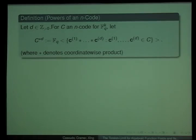So far, we have only talked about the usual properties of secret sharing. Now we define the arithmetic properties that distinguish this line of work. It's all about powers of an n-code. Given an n-code and a positive integer d, we define the d-th power as being the linear span of all coordinate-wise products of codewords in C.